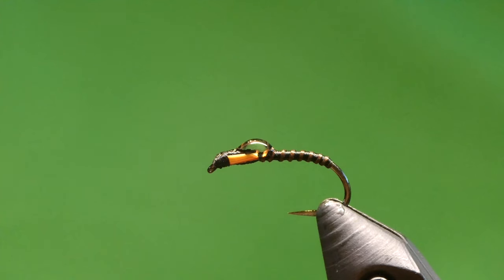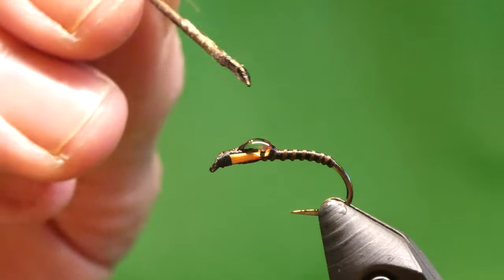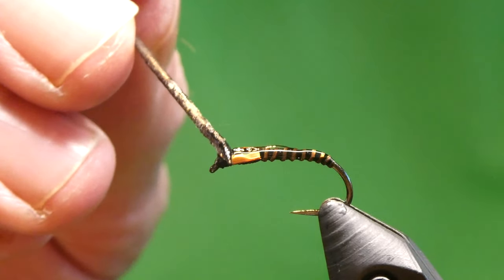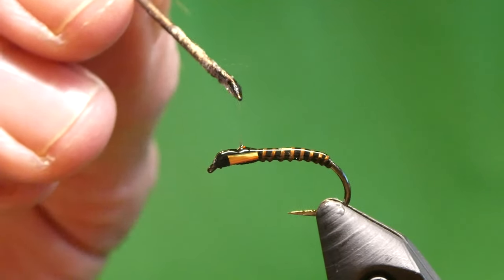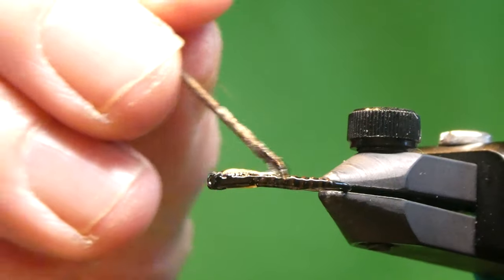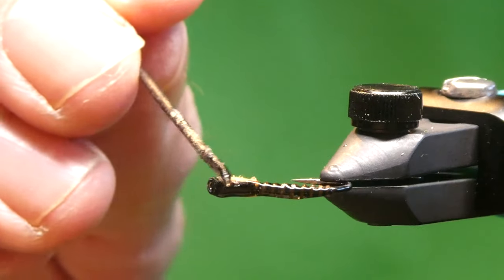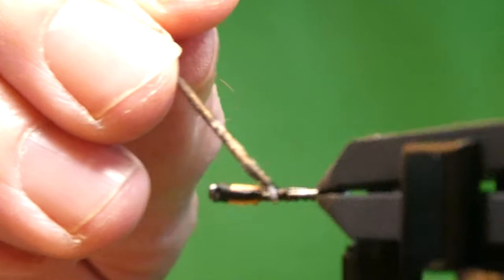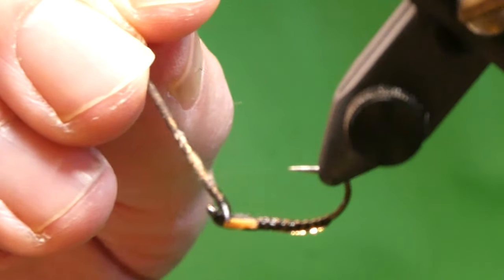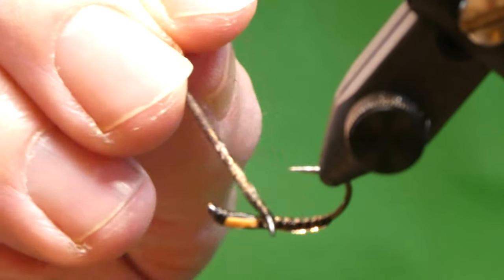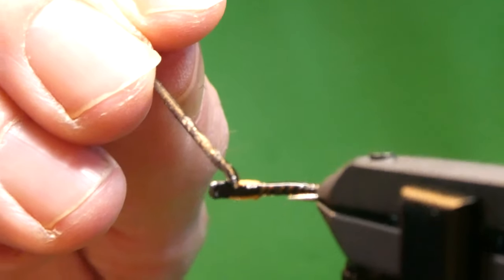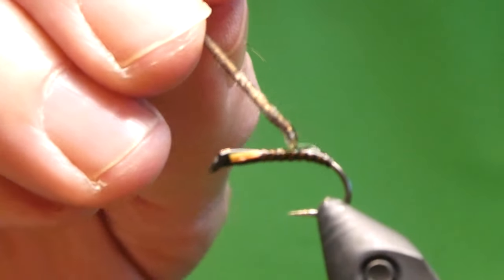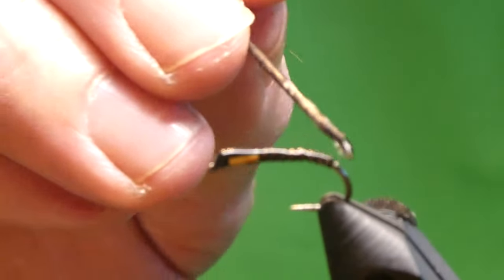A little blob on and just spread it out with a dubbing needle. This makes your buzzer, gives it a glassy look.